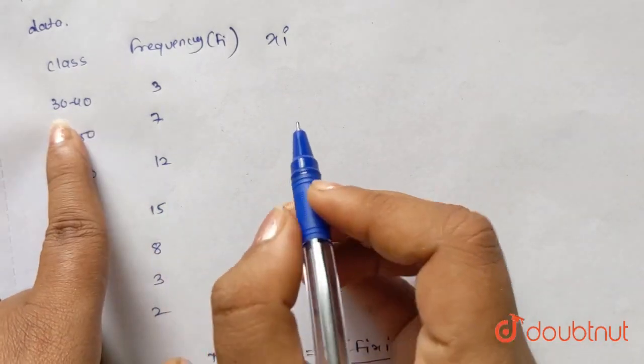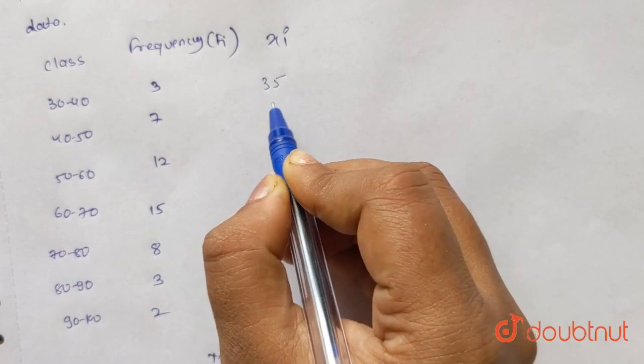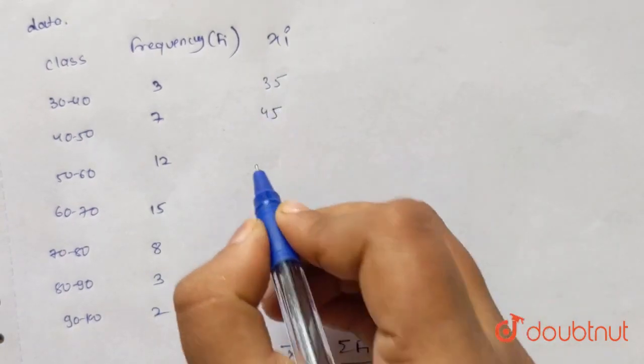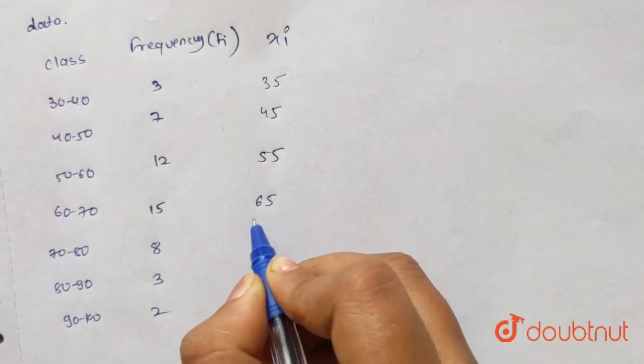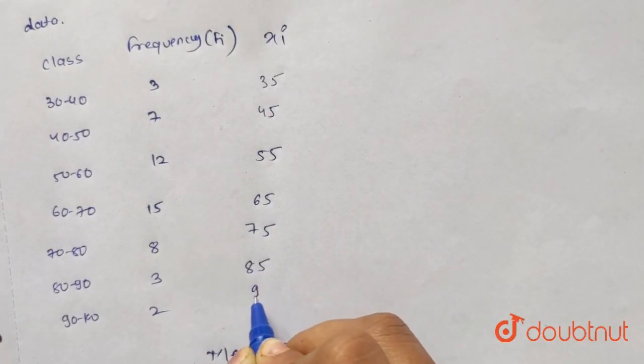Here we have 40 plus 30 equals 70, 70 divided by 2 equals 35. So we get 35, 45, 55, 65, 75, 85, and 95.